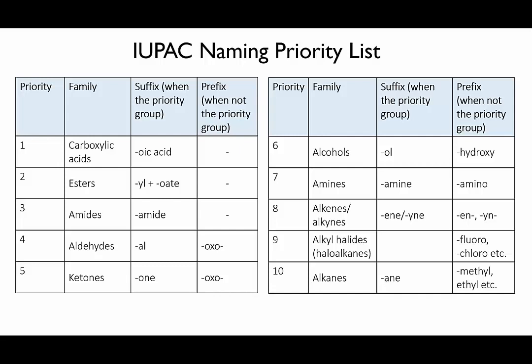When you have two functional groups in a molecule, whichever one is higher up on this list will be the one that determines the suffix of the name. It will be treated exactly like all the examples we've done in previous videos. The other, lower priority functional group will be named like a substituent, and for that purpose each group has another name that's used in this situation.